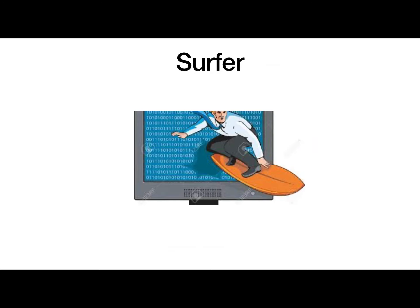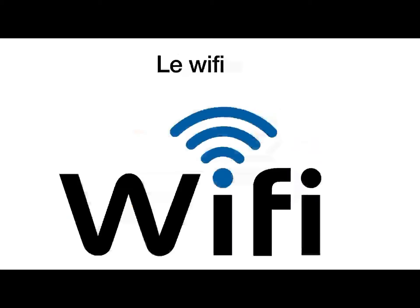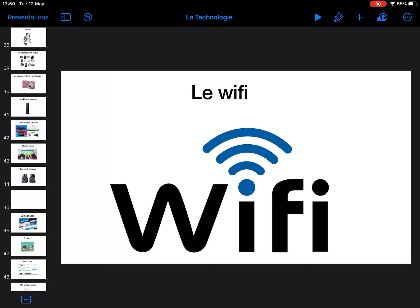Surfer le net is to surf the net. I don't think anyone really uses that term anymore, but it's still there — to surf the net, to go online basically. Taguer, taguer is to tag — to tag people on a story or to tag people on Facebook or whatever it might be. Le wifi is wifi. So that's all of the online vocab, and I'll just give a quick run through that with you.